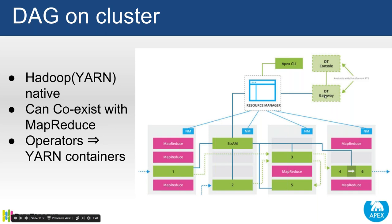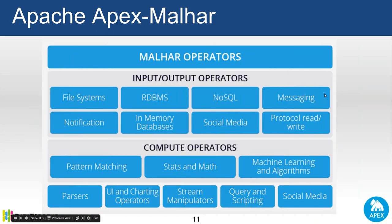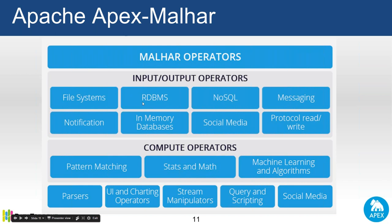To the right we have DT Console and DT Gateway, which are web-based graphical tools for monitoring and launching applications, available as part of DataTorrent RTS. The Malhar library is a collection of operators covering things like connecting to various file systems such as FTP, S3, HDFS, various RDBMS systems, JDBC, NoSQL systems like Cassandra, messaging buses like Kafka, social media like Twitter, or in-memory systems like Apache Geode. There are various operators available off the shelf that you can configure for your use case without writing them from scratch.